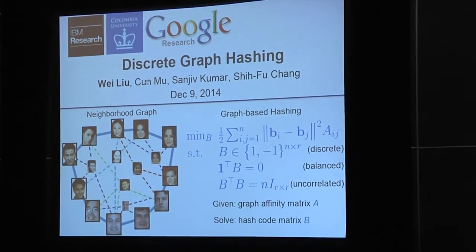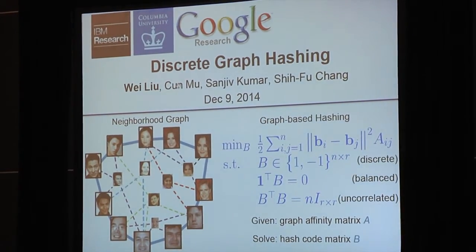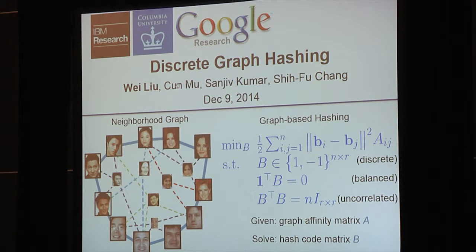Next we have Wei Liu, who is going to talk about discrete graph hashing. My name is Wei Liu, and I'm going to present discrete graph hashing. This is joint work with Chen Mu and Shifu Chang from Columbia University and Sanjeeb Kumar from Google Research. The problem is: given a graph represented by an affiliation matrix A, we want to learn the hash code matrix B based on this graph hash framework. There are three constraints, including the discrete constraint, which requires the binary code to be drawn from {+1, -1}.